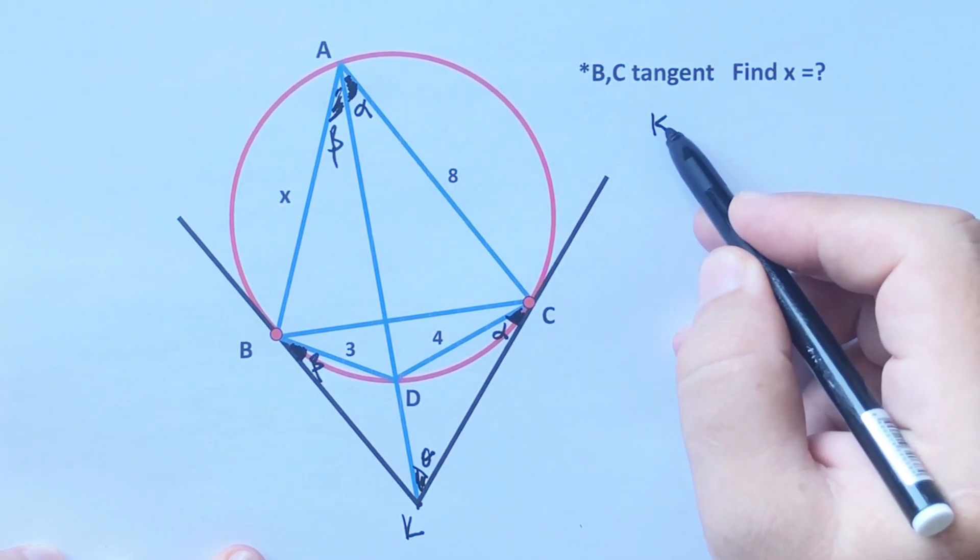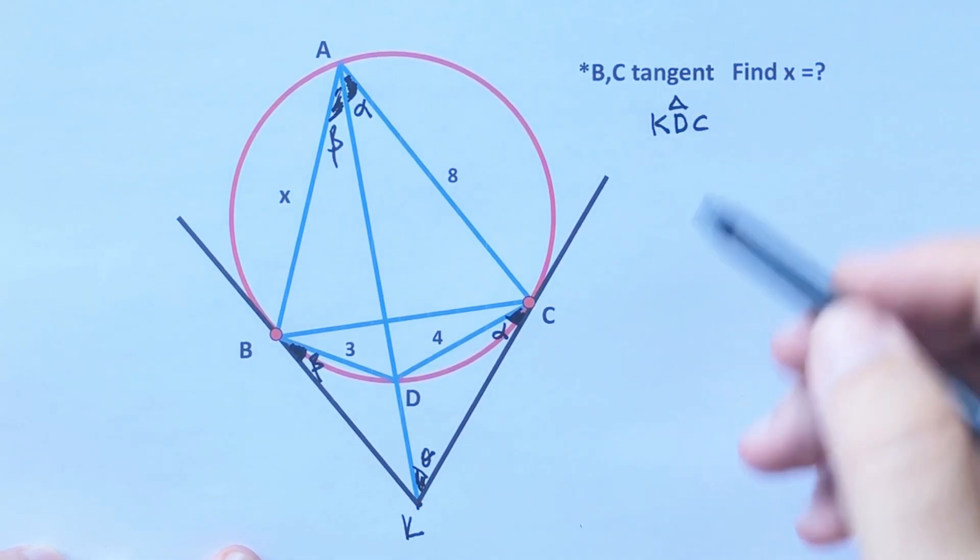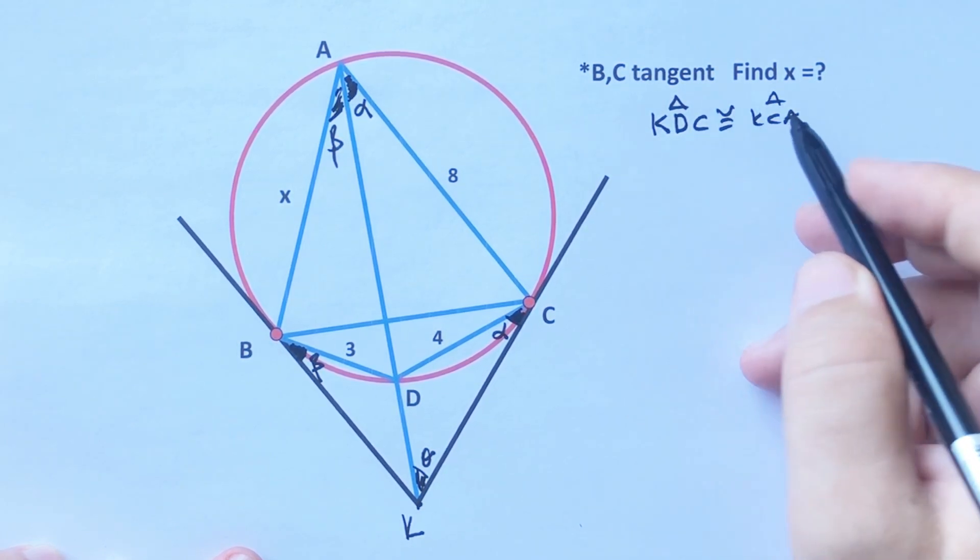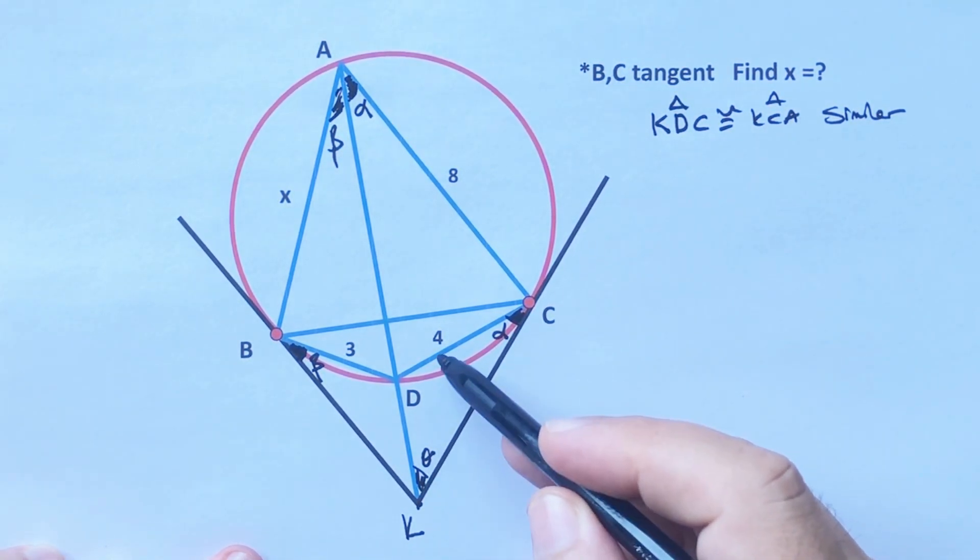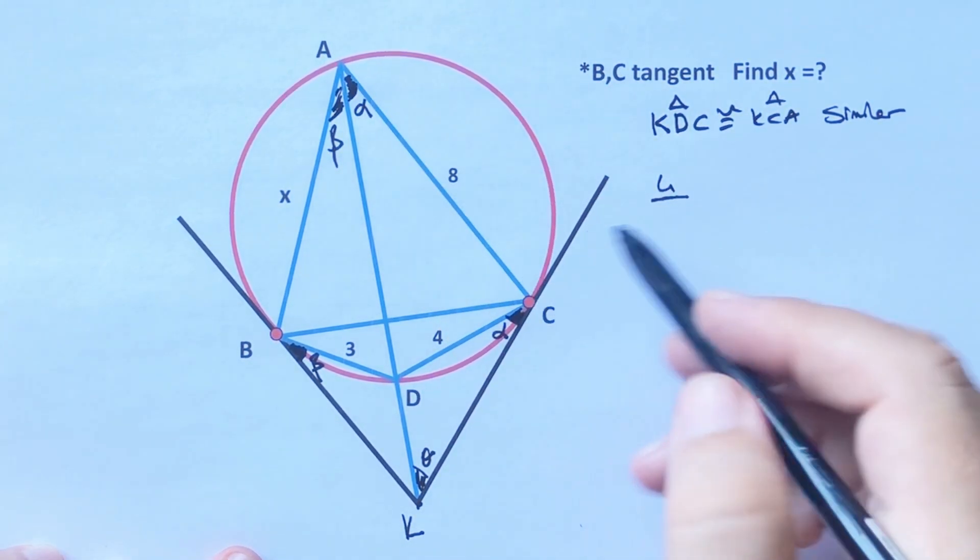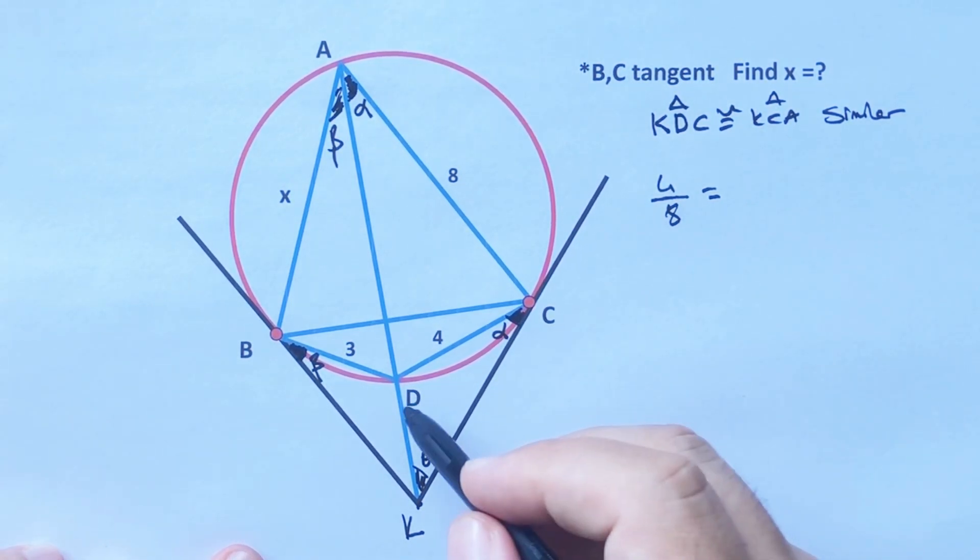Notice that KDC triangle and KC8 triangle, these are similar, right? Because they have same angles. Okay, 4 which is opposite of the theta over 8 which is opposite of the theta equals...